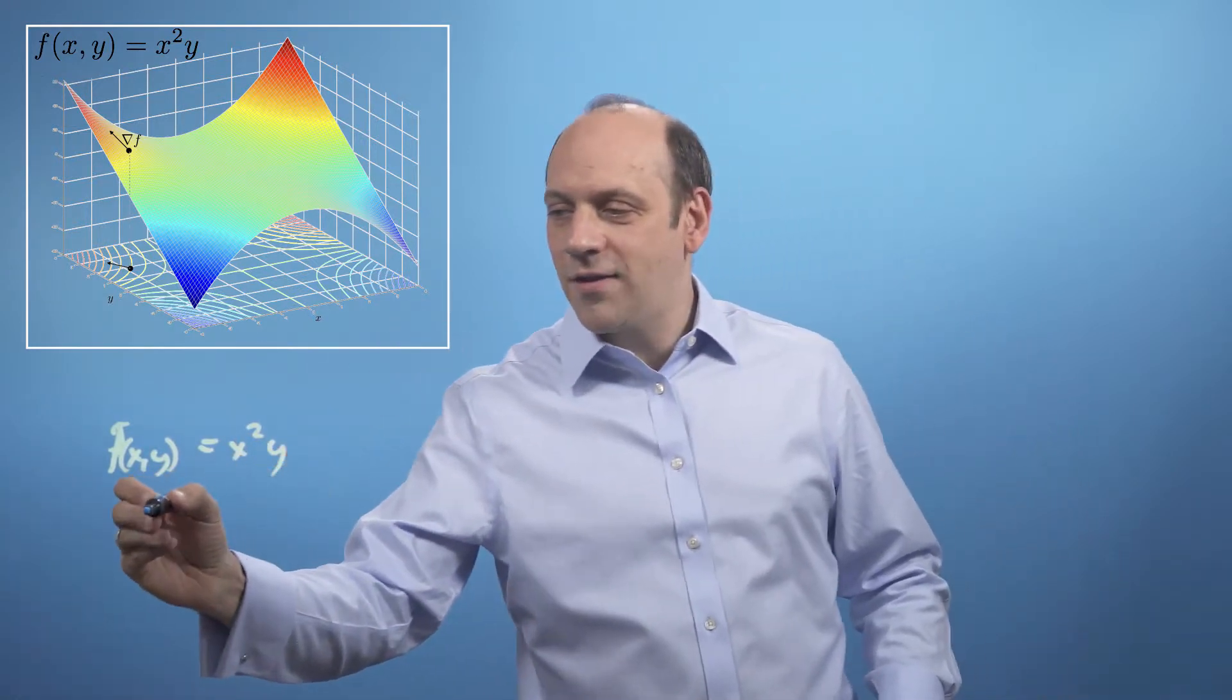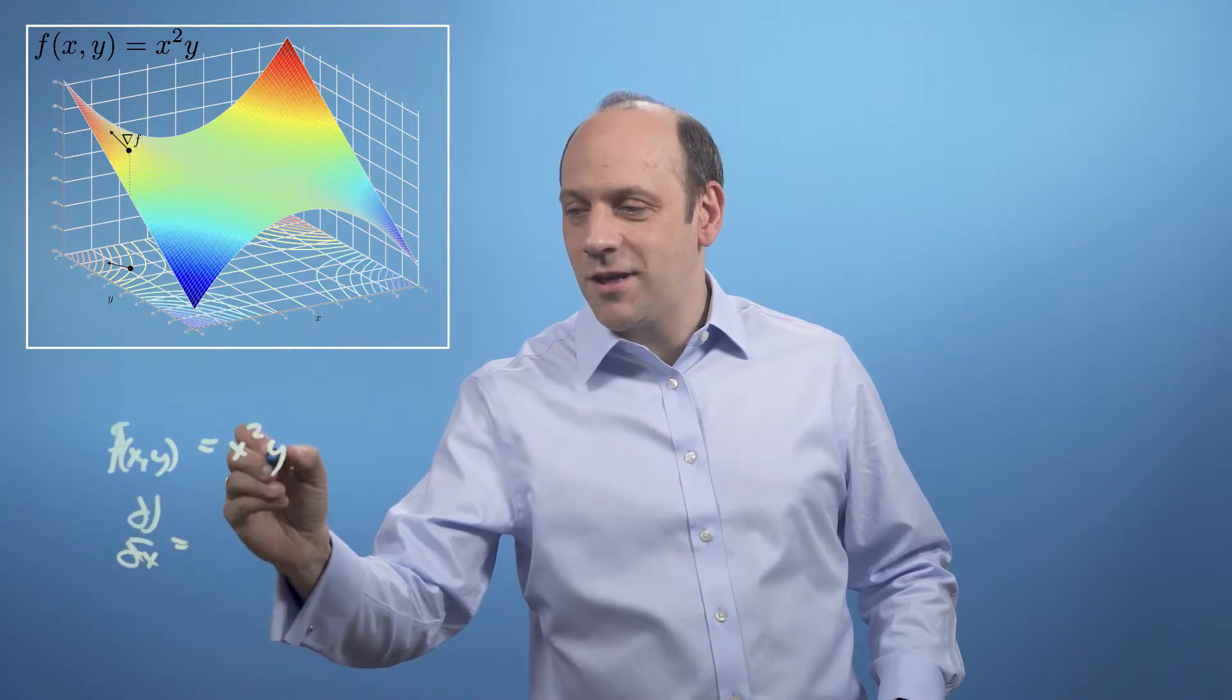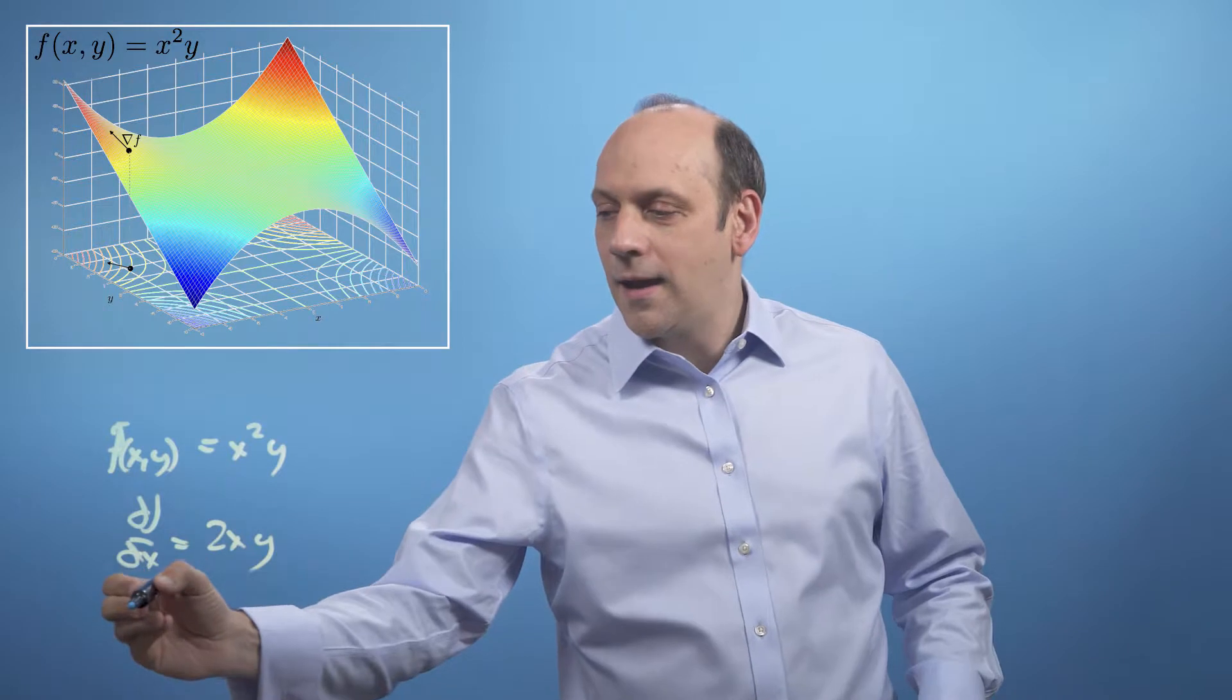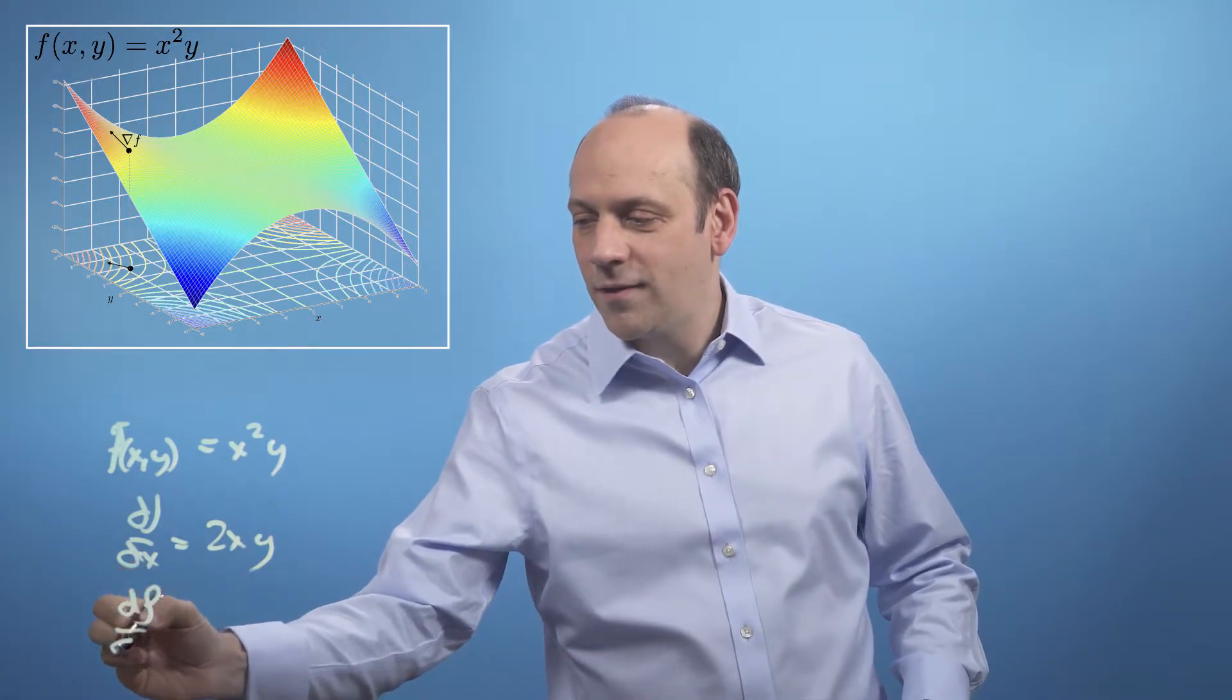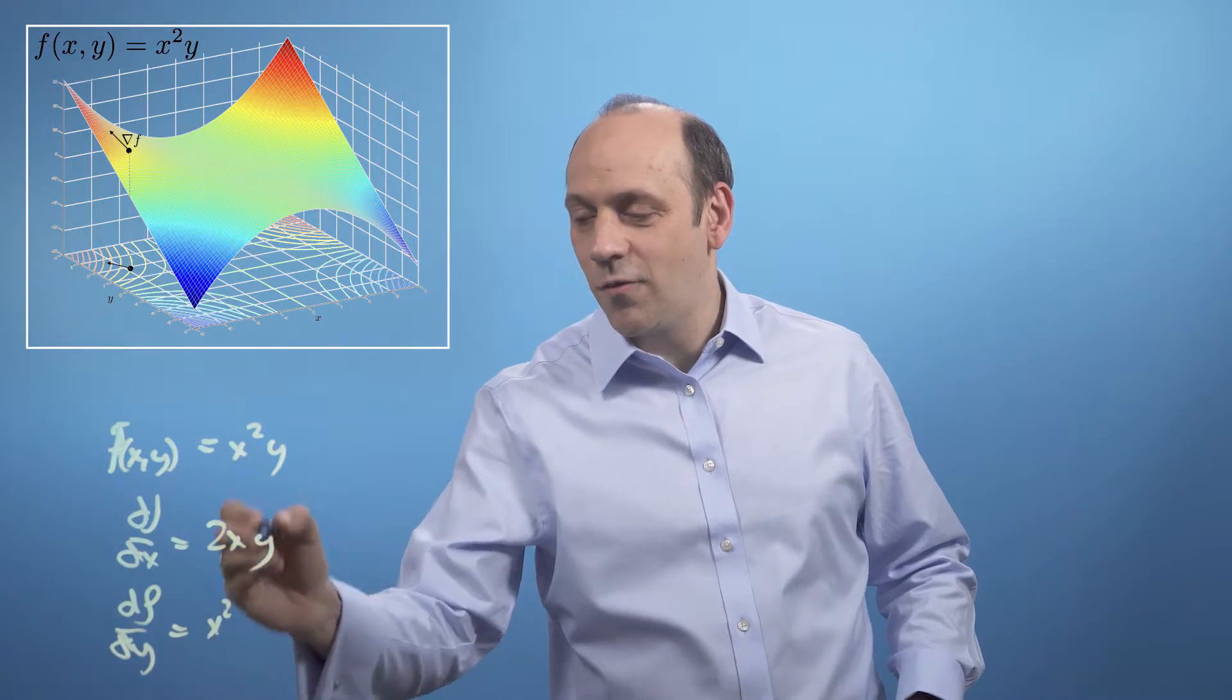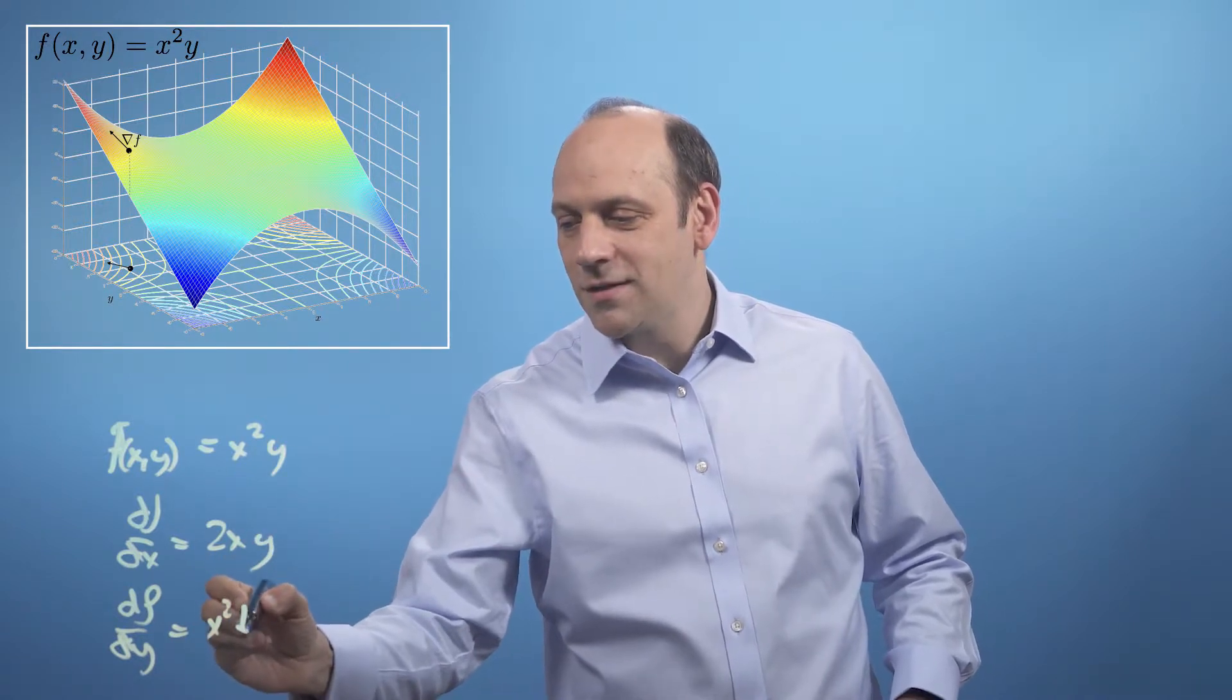And so df dx is equal to differentiate that treating y as a constant. So that's just 2x times y and df dy is equal to, well, the x squared we treat as a constant and y differentiates just to 1, so it's just x squared.